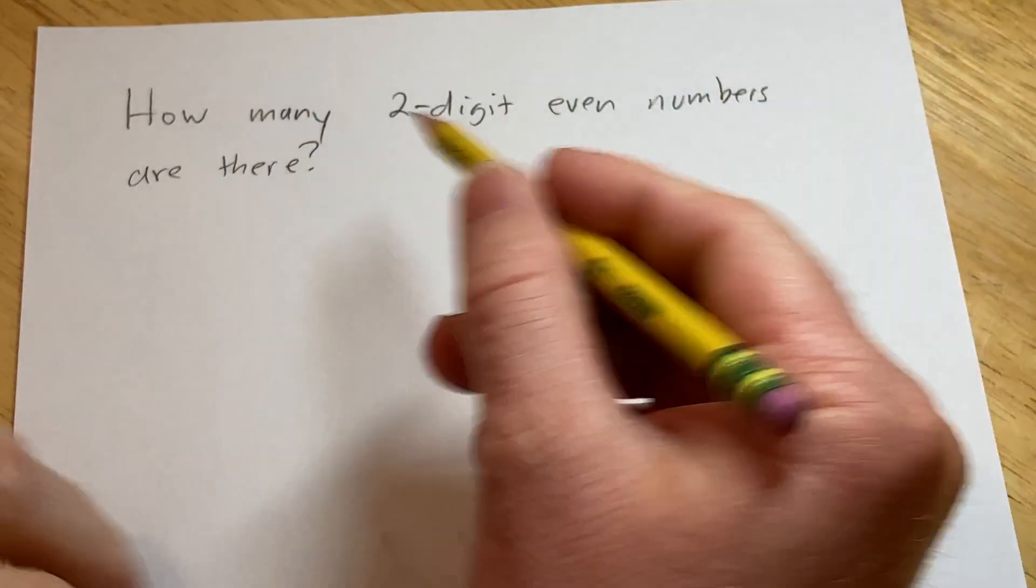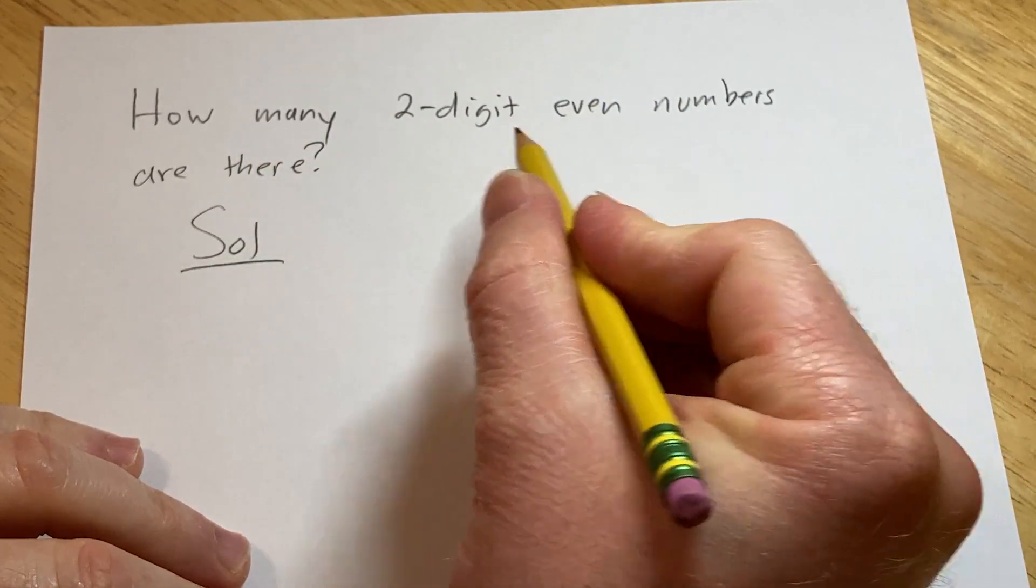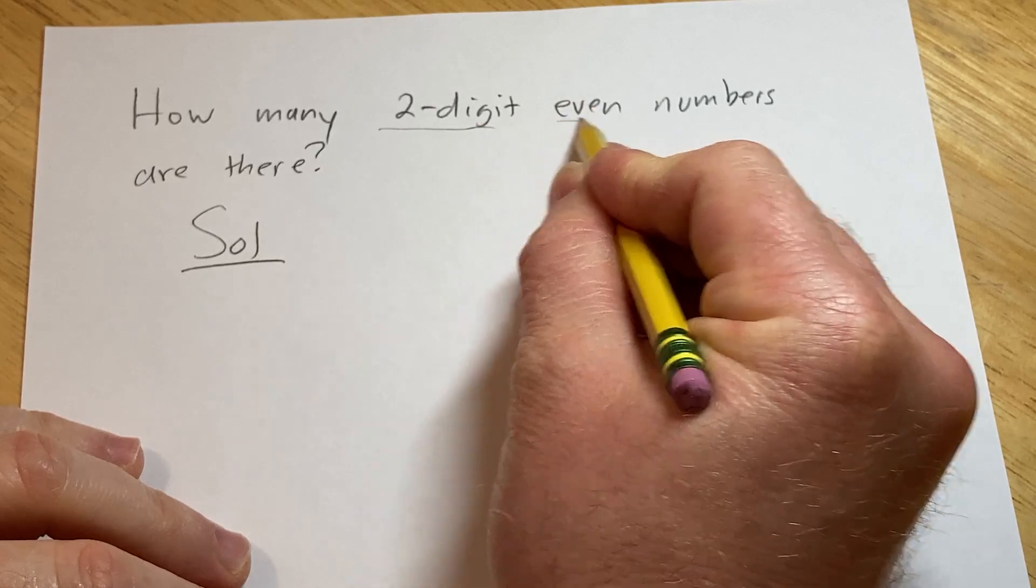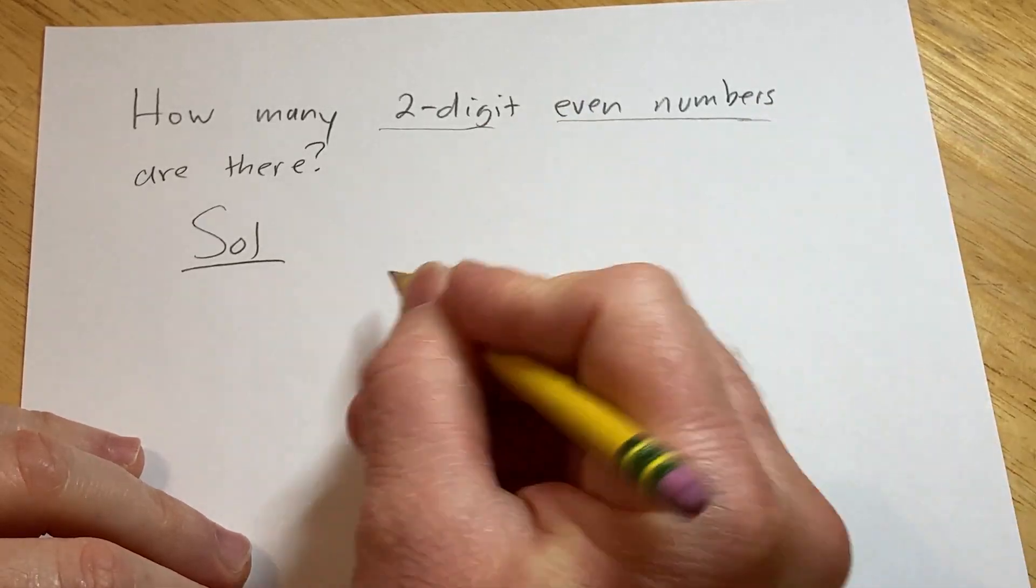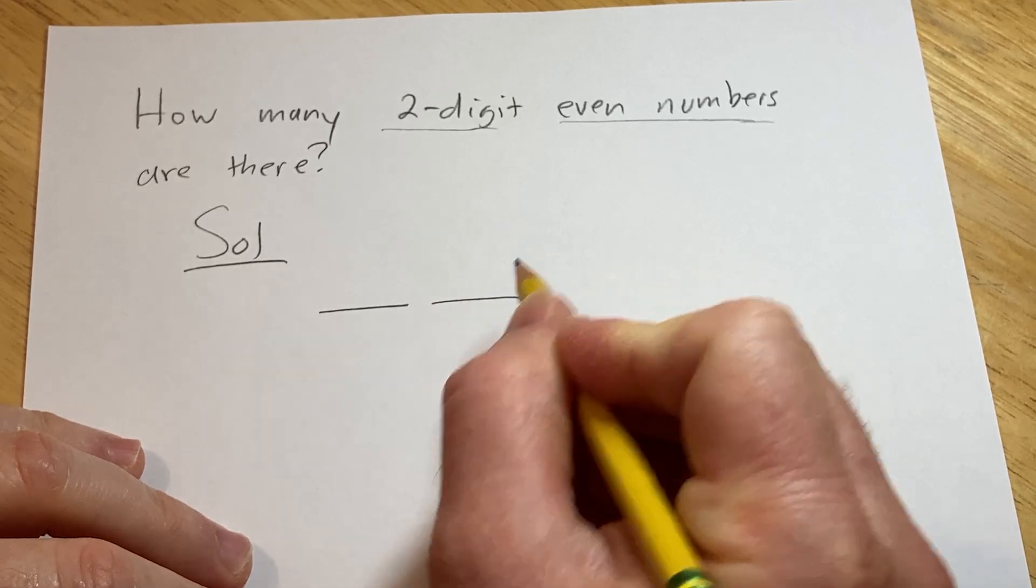So let's go ahead and think about this carefully, solution. We're looking for two-digit even numbers, so let's draw a little picture here. This will be the first digit, this will be the second digit.